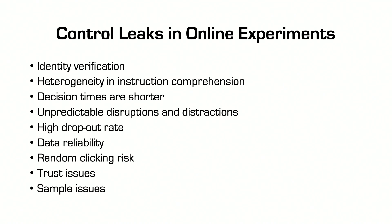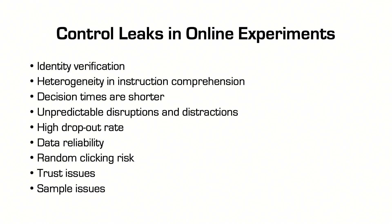People might not be paying as much attention for various reasons. When you are conducting experiments online, there could be unpredictable disruptions and distractions to participants — internet outages, or subjects could simply be distracted. These distractions will be different across participants. In the lab, if there is a distraction such as a software failure, all subjects are affected in the same way. Online, different participants in the experiment would have different experiences, and this is a problem.